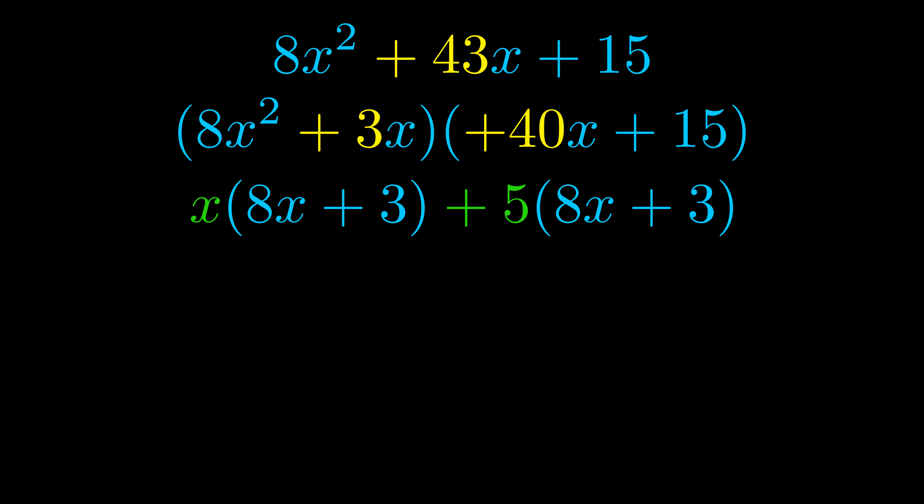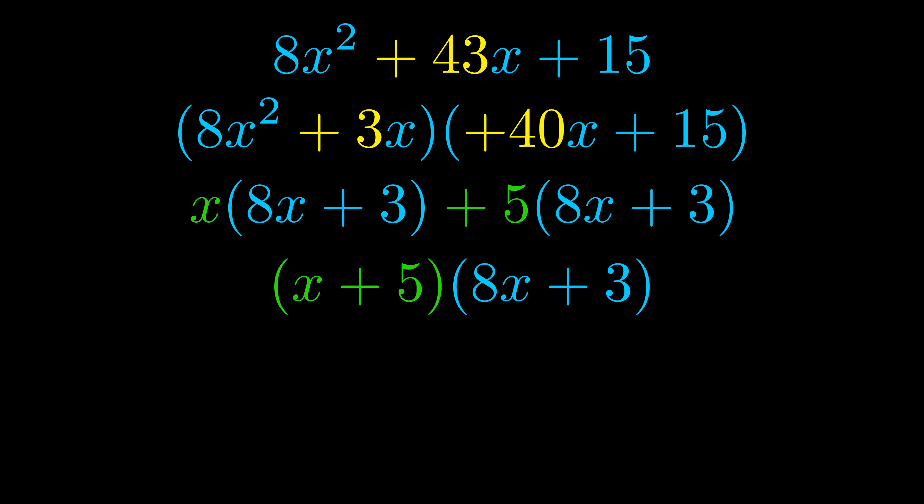Notice also how what remains inside of the parentheses is the same in both cases — the blue values are the same. Those blue values will become one of our factors, and we will combine the two green values, the GCFs that we pulled out, to get the other one. And that is our fully factored equation. Thank you for watching.